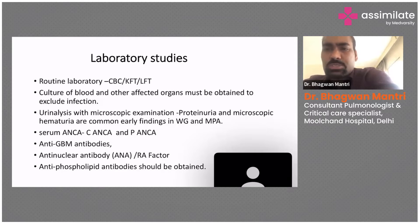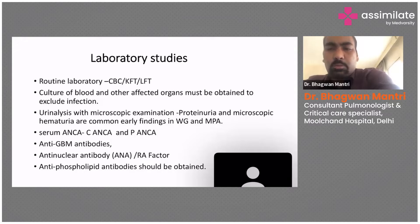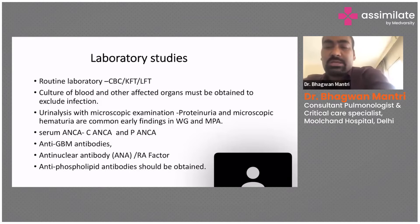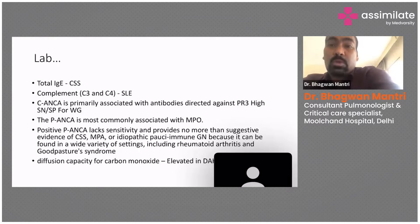We need to send anti-GBM antibody to diagnose Goodpasture syndrome, anti-nuclear antibody to assess for vasculitis disorders, rheumatoid factor because rarely rheumatoid arthritis may also present with DAH, antiphospholipid antibody, and total IgE because Churg-Strauss syndrome can also present with DAH.